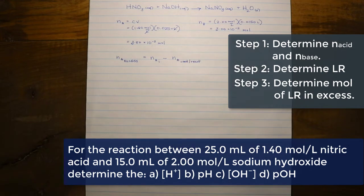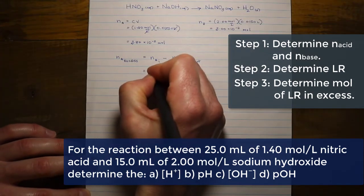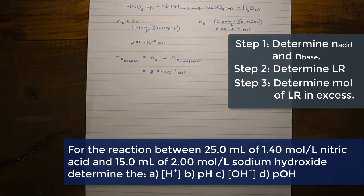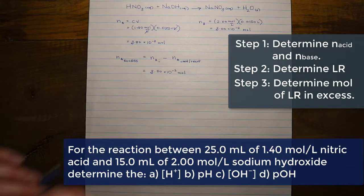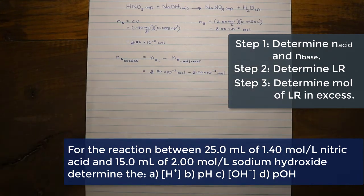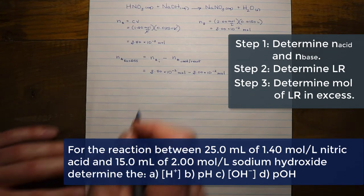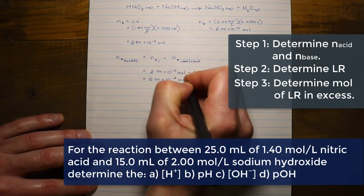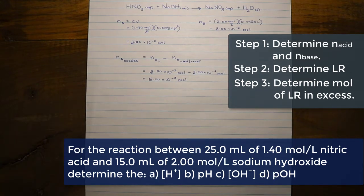We need to figure out the number of moles of acid in excess — how many moles are left over. To find what's remaining, you need to know how much you started with and how much was removed. We started with 3.50 × 10⁻² moles of acid. Since the ratio is one-to-one, we used 3.00 × 10⁻² moles of acid to neutralize all the base. That leaves 5.00 × 10⁻³ moles of acid remaining.